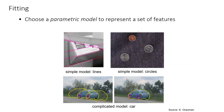Here you can see parametric models have been fitted to represent these features — for example, here the lines, here circles, and here a complicated shape to fit the car.